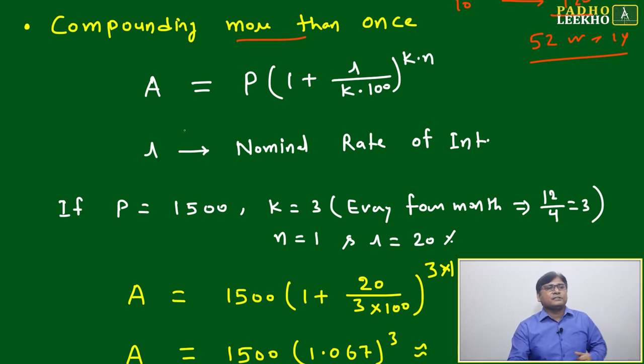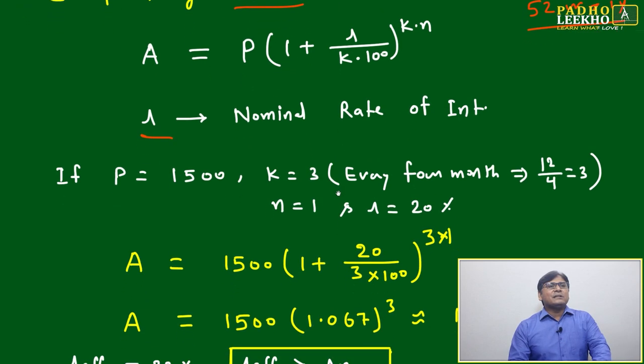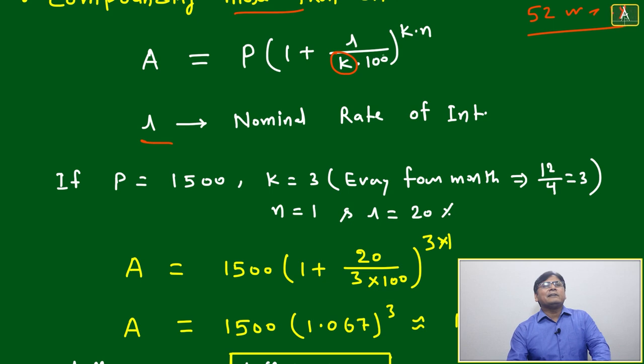Your total amount A will be equal to P times (1 + r/(k×100))^(k×n), where r is the nominal rate of interest. We are just dividing r by k here and multiplying the exponent by k - nothing else. The formula calculation will be the same.